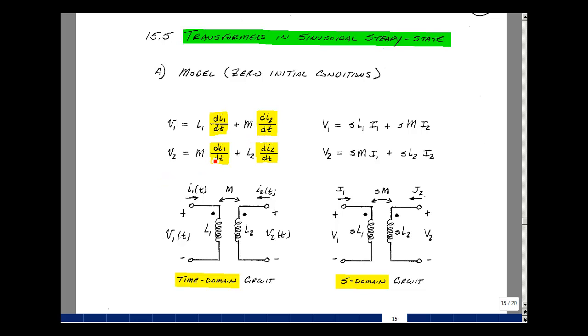And V2 is equal to M dI1/dt plus L2 dI2/dt. Now, if we take the Laplace transform of this, the Laplace transform of a derivative is just S. So we'd have L times SI1. You could bring the L1 inside here. And likewise here for M times SI2. And likewise here, M times SI1, and then L2 times SI2.